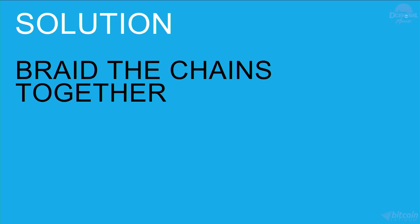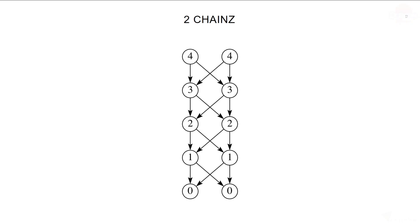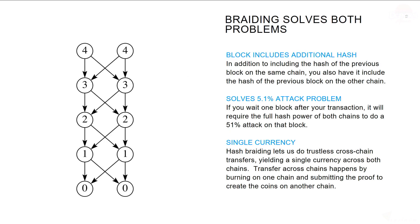But there is a solution: braid the chains together. Here's what it might look like with two chains. Each block includes an additional hash of the previous block on the other chain, in addition to the normal hash of the previous block on the same chain.